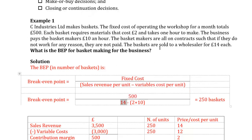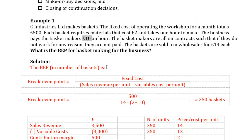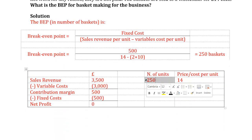Our variable cost will be £2 material cost plus £10 labour cost per hour, and we need only one hour, so it's £12. So: 500 divided by (14 minus 12) = 500 divided by 2 = 250. That means if we decide to produce 250 baskets, our revenue minus our cost — our net profit — will equal zero. This confirms that producing 250 baskets achieves zero profit.